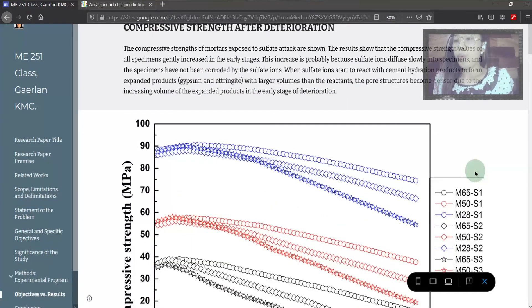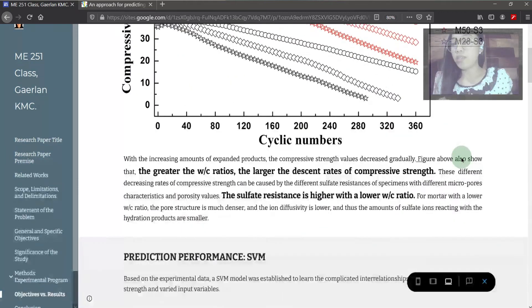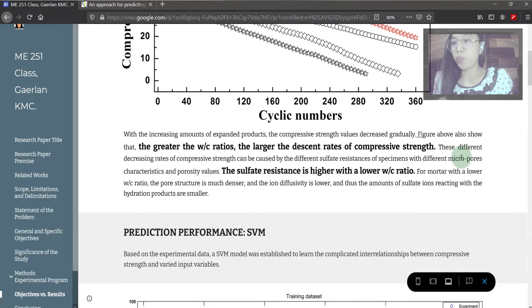Results appear for compressive strength after deterioration. Note, mortars exposed to sulfate attack, values of all specimens generally increased in the early stages, probably because sulfate ions diffuse slowly into specimens. Figures also show that the greater water to cement ratio, the larger the descent rates of compressive strength. This is caused by the different sulfate resistances of specimens with different microstructure characteristics and porosity values.